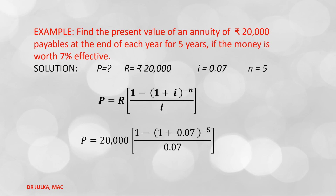Putting R = 20,000, i = 0.07, and n = 5, after calculation we get the value of P = Rs. 82,003 and 95 paisa.